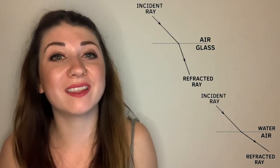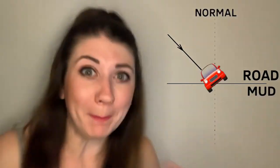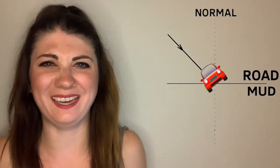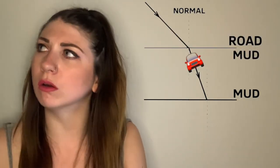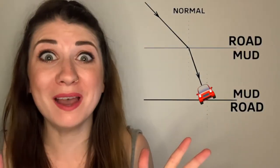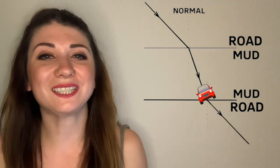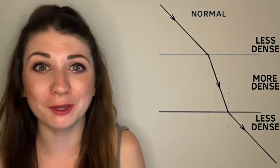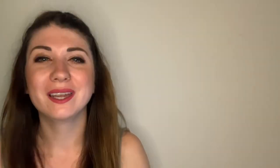Now let me clarify why light bends in the directions it does. Imagine a car driving along a road at the same angle that the light ray is traveling. It's driving along and then BAM — it hits the mud. Immediately, the front right wheel gets slowed down first, and this turns the car to the right, towards the normal. Then it's driving through the mud at a slower pace, and then BAM — it's out of the mud. The front right wheel speeds up first and turns the car away from the normal. This is an analogy for light rays traveling through different transparent mediums, where the road is a less dense medium like air and the mud is a more dense medium like glass.